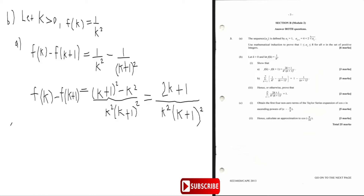Now part B — it was coming in part B. Part B says hence find the sum from one to n of one over k squared minus one over k plus one all squared. So we're really finding the sum from one to n of f of k minus f of k plus one.